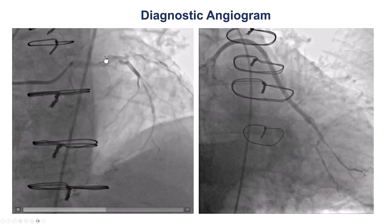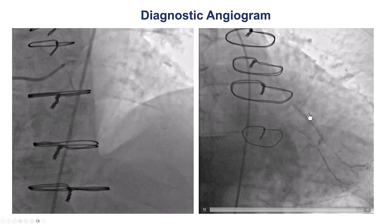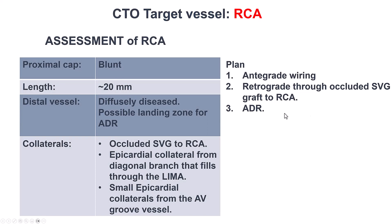There was some disease into the left main, and there was a patent saphenous vein graft to the obtuse marginal branch. We had a clear but relatively blunt proximal cap, length of about 20-30 mm. We did have an occluded vein graft that could be used as a retrograde approach, and some epicardial collaterals that did not seem to be very good for retrograde.